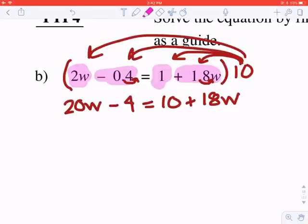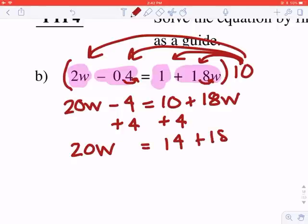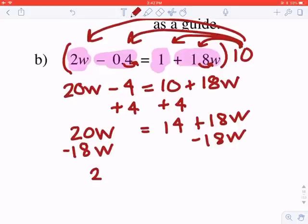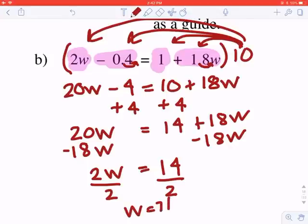It doesn't really matter what side you put the variables on and what side you put the constants on. But I see if I bring the negative 4 to this side, I'm going to get a positive answer. And if I bring the 18 to this side, I'm going to get a positive answer. And I prefer positives. So I'm going to add 4 to both sides. That's going to give me 20w, 4s cancel out, equals 14 plus 18w. And I'm going to subtract 18w from both sides. That's going to give me 2w equals 14. Divide both sides by 2. And I have w equals 7. Box your answer.